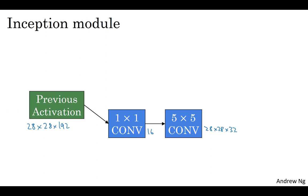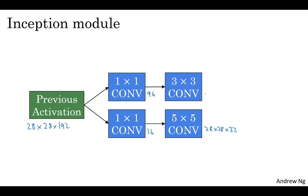This was the example we worked through on the last slide of the previous video. Then to save computation on your three by three convolution, you can also do the same here. And then the three by three outputs 28 by 28 by 128.